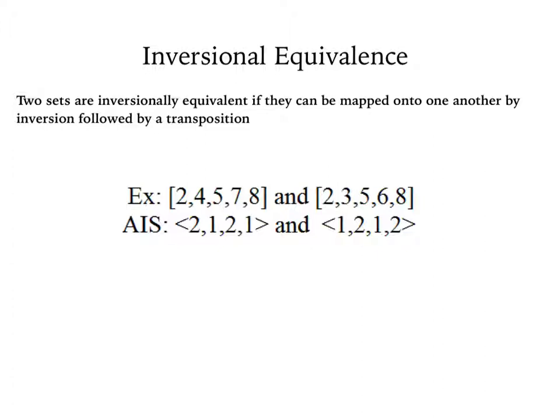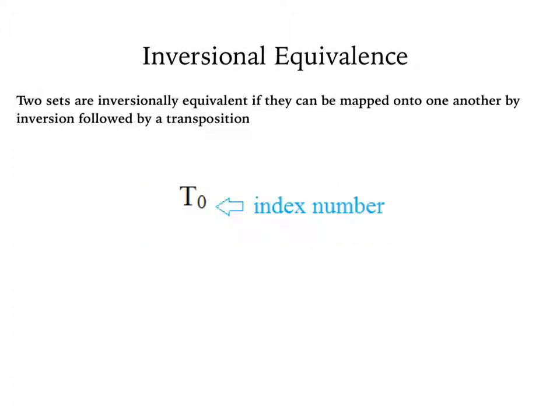Okay, so we know that the AISs of these two sets are inversional, but let me repeat what I said earlier. Two sets are inversionally equivalent if they can be mapped onto one another by inversion followed by transposition. This means that any inversion will also include a transposition, even at T0. Zero in this case is the index number, that is, the transpositional operator applied to an inversion.